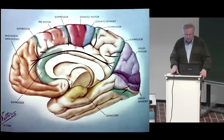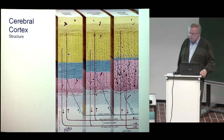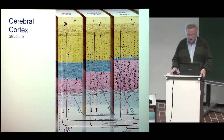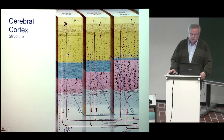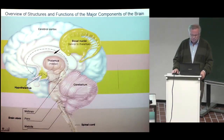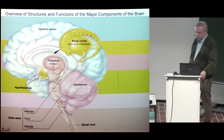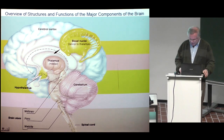This is just the same information given from one hemisphere. The structure of the cerebral cortex is different in different regions. Here I give an overview of structures and functions of the major components of the brain.